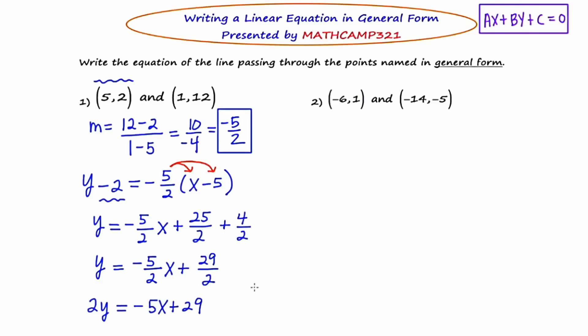So we're getting really close to this general form. We just have to have it fit the template up here, which essentially means get everything to one side and zero on the other side. I'm almost there. So my final step will be to move the negative 5X over and the positive 29 over for a final answer of 5X plus 2Y minus 29 equals zero. So there's your general form for example number one.